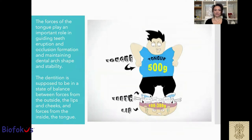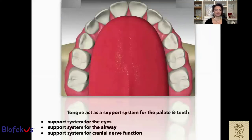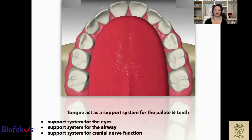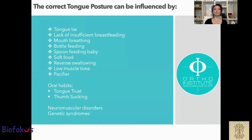The dentition is supposed to be in a state of balance between forces from the outside — the lips and cheek — and forces from the inside — the tongue. The tongue acts as a support system for the palate and teeth, support system for the eyes, support system for the airway, and support system for cranial nerve function.